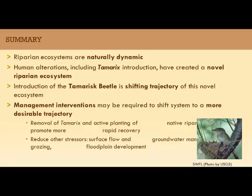In summary, riparian ecosystems are naturally dynamic. Human operations including the invasive tamarisk have created novel riparian ecosystems. These systems are being further altered by the tamarisk beetle, shifting the vegetation trajectory of these systems. What we need to do as restoration planners and practitioners is understand what range of trajectories our systems are likely on — with and without management — and where management should meet or shift the system to a desirable trajectory. We also want to be thinking about things like genetic stock and climate adaptation.